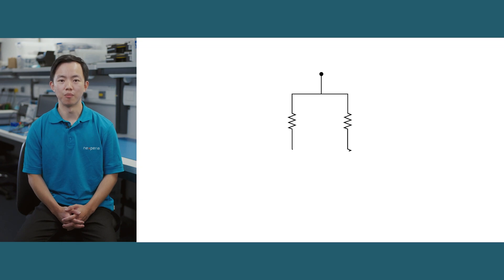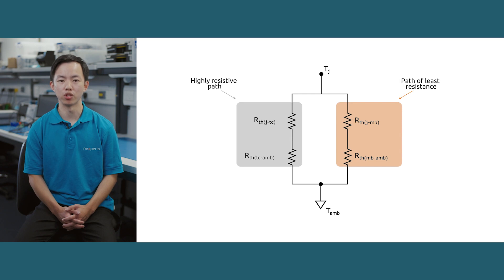This is because the path for heat to flow through the top case is highly resistive, resulting in a very small temperature gradient.